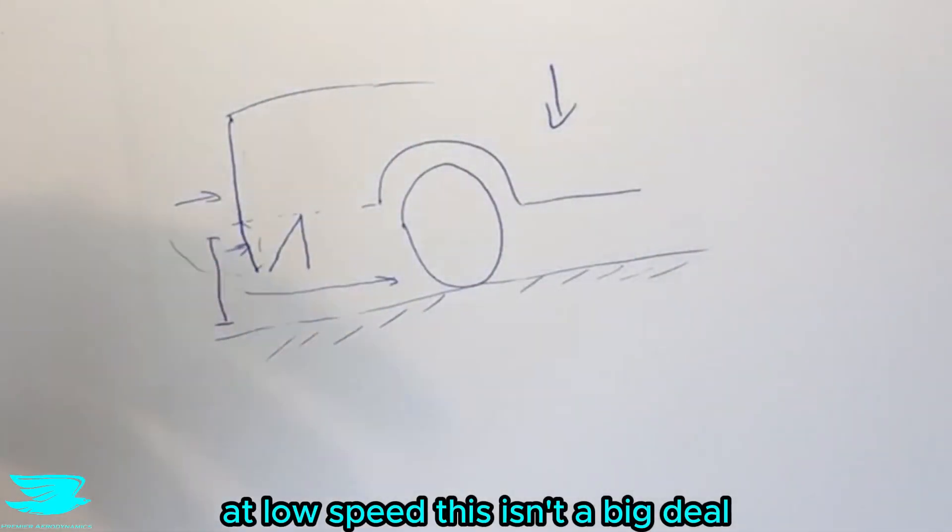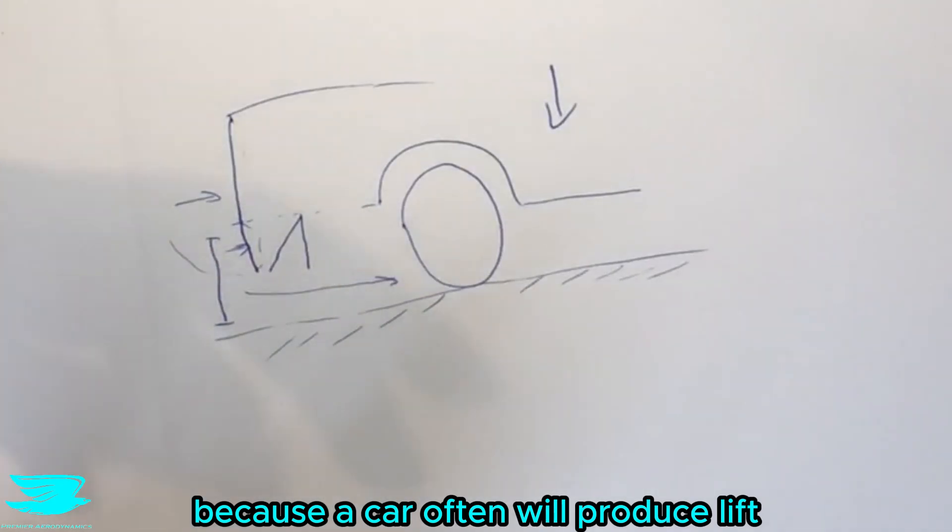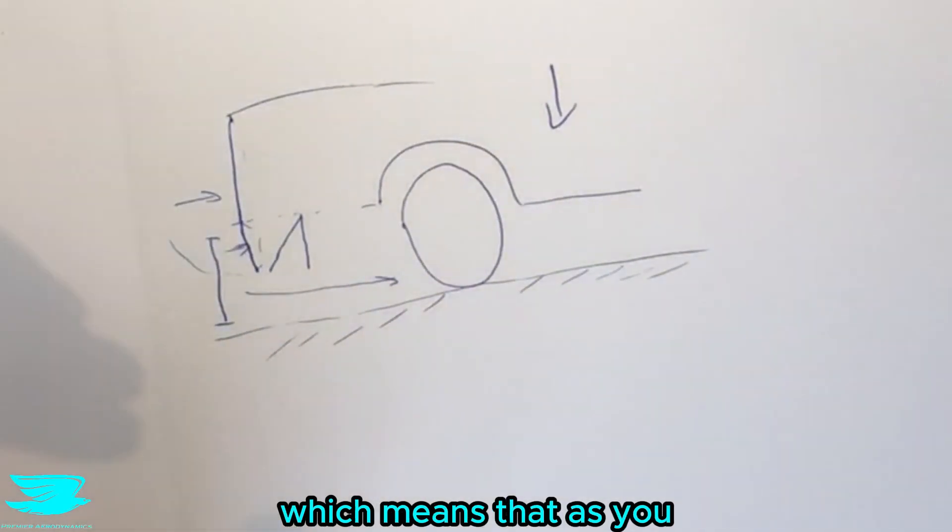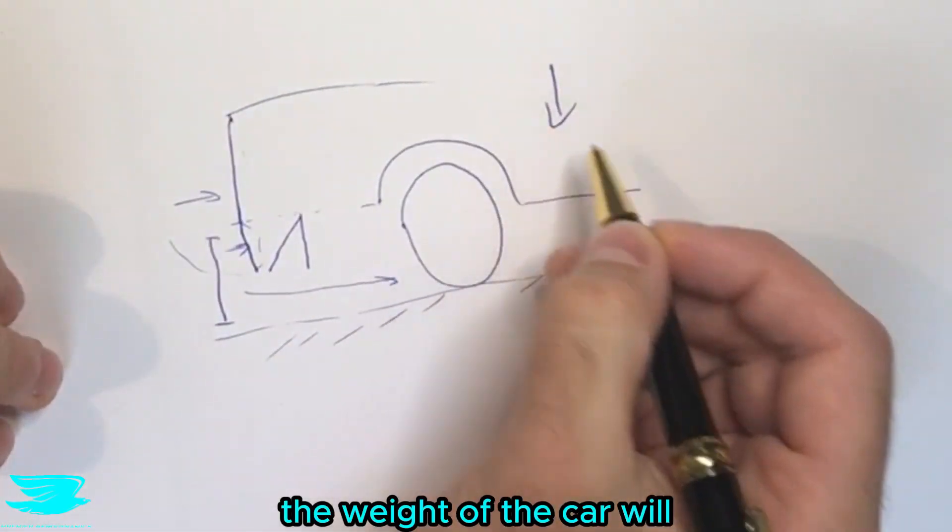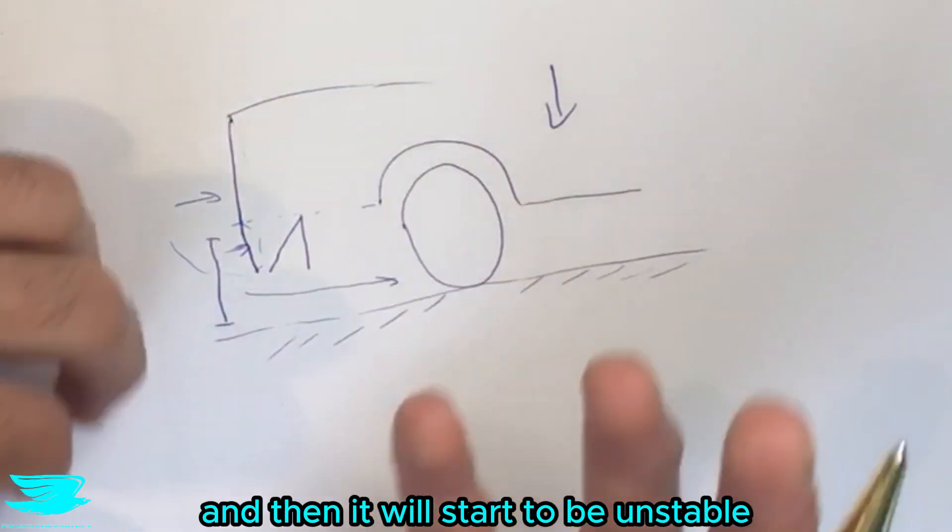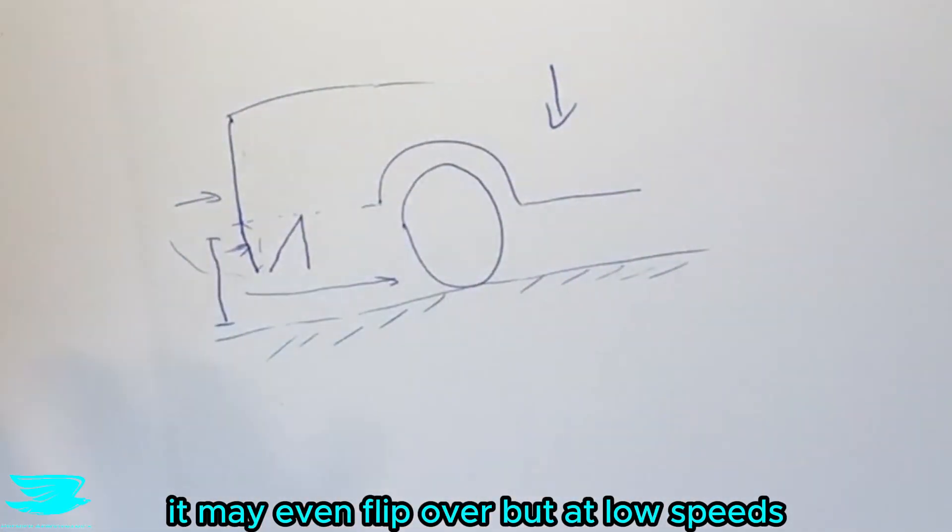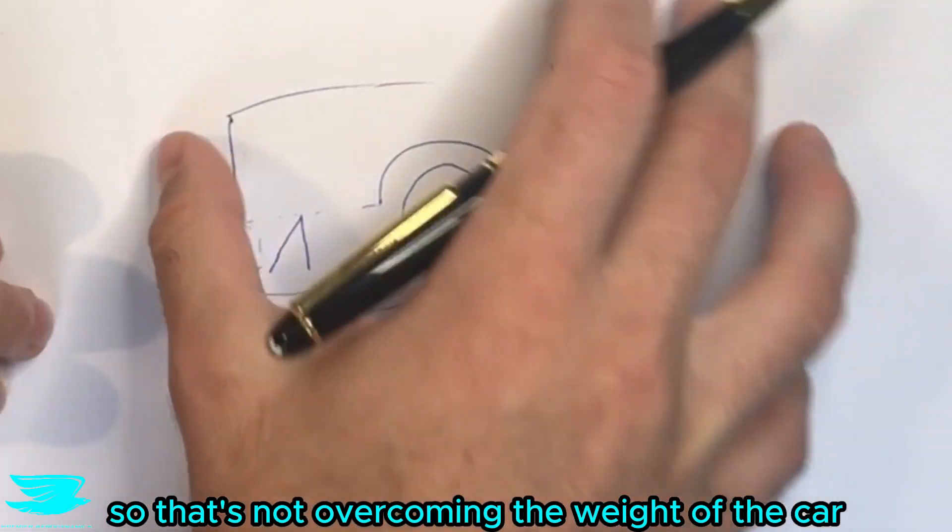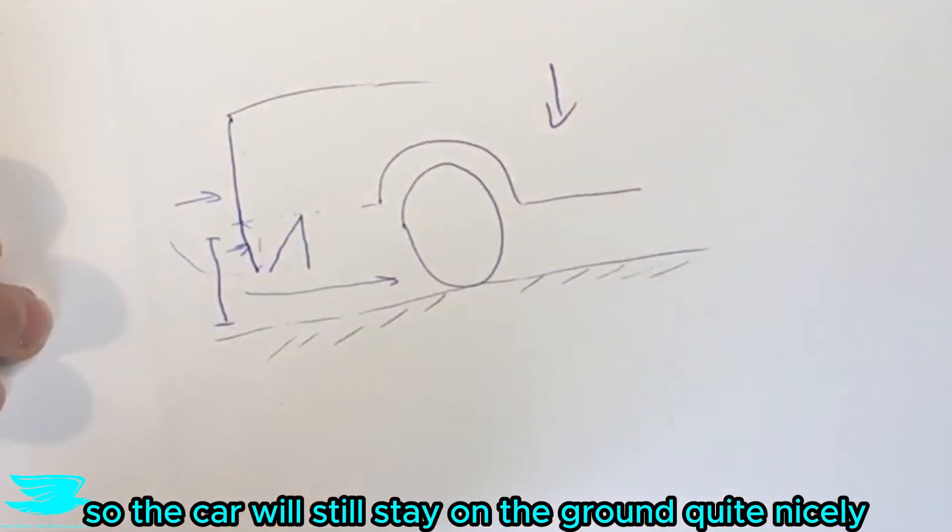At low speeds this isn't a big deal because a car often will produce lift so the lift coefficient will be positive which means that as you go higher and higher in speed the weight of the car will be overcome by the lift and then it will start to be unstable, it may even flip over. But at low speeds we don't have that much force from the lift so that's not overcoming the weight of the car so the car will still stay on the ground quite nicely.